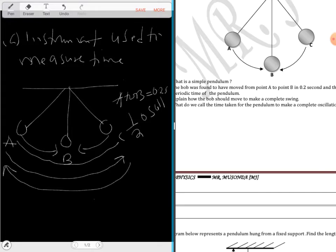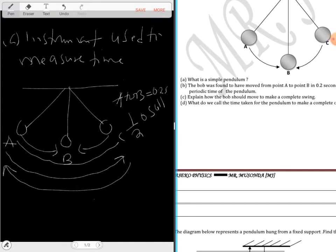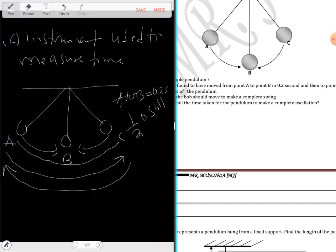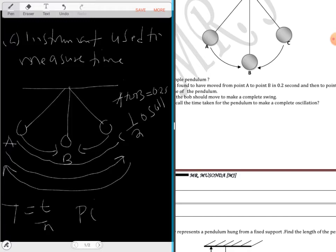What do we call the time taken for the pendulum to make a complete oscillation? The time taken to make one complete oscillation is the period, which goes by this formula.